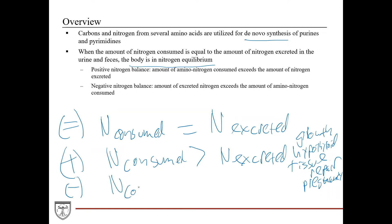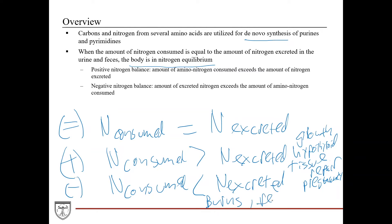Negative nitrogen balance is when the amount of nitrogen consumed is less than the amount excreted, meaning nitrogen intake is not adequately replacing what is lost. This occurs in patients with burns (due to extensive protein breakdown), fever (which increases metabolic activity), hyperthyroidism, and severe fasting, where the body must break down proteins and use amino acids for energy. All of these lead to excreting more nitrogen than is taken in.